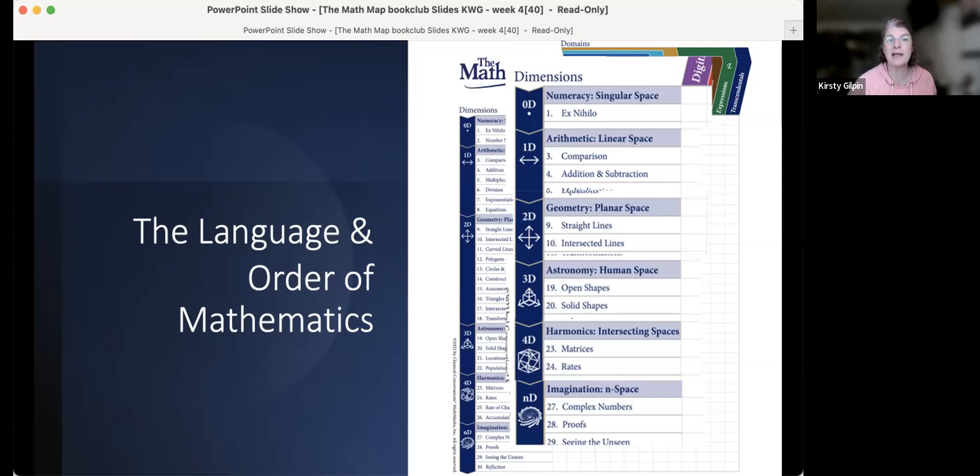Back to the math map, we've talked a couple of weeks about the domains and how the domains sort of give us a sequence for the curriculum. We can look at the same concepts and ideas using different kinds of numbers to make things simpler or more difficult, which really stems from whether or not they're familiar or unfamiliar. The scope of the curriculum is really designed or defined by the dimensions.